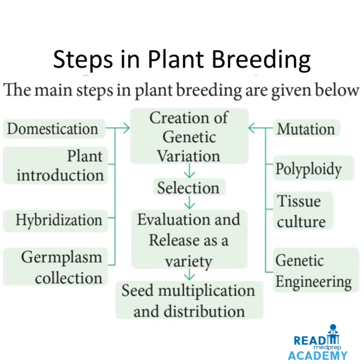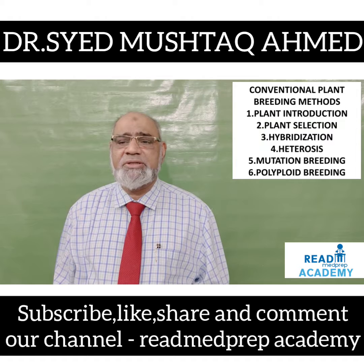The main steps in plant breeding are domestication, done through plant introduction, hybridization and germ collection, and by mutation like polyploidy, tissue culture and genetic engineering. Domestication and mutation help in the creation of genetic variation. Through selection and evaluation, release as a variety, then seed multiplication and distribution for further propagation of the plants.